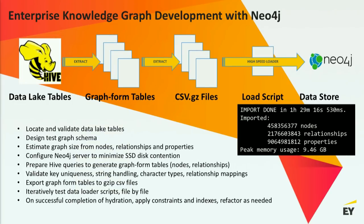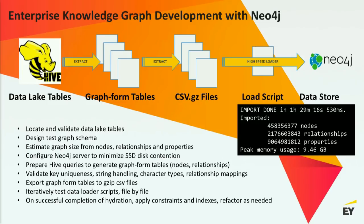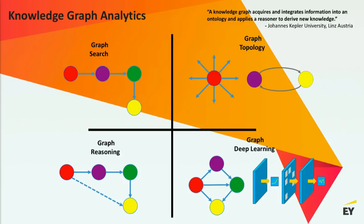Just to show how quickly you can do this: once your data is cleaned up, you can leverage Neo4j's fast loader tool. We're loading about half a billion nodes and two billion relationships in just over an hour and a half. Graphs are great for searching, reasoning, and interesting things around graph topology. There's also a whole body of work — as Amy mentioned — using graphs to engineer features for deep learning. A sandbox for that might look like an AWS example with Neo4j on top of Hive, running whatever machine learning application you prefer, whether H2O.ai, TensorFlow, etc.